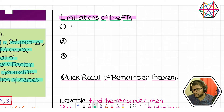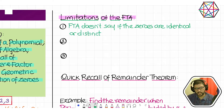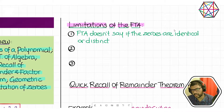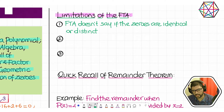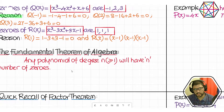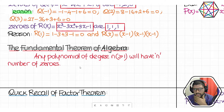FTA does not say whether the zeros are distinct or repeating. FTA does not say anything about if the zeros are identical or distinct. All that it states — the fundamental theorem of algebra — is that if the degree is n, there are n number of zeros. But it does not say anything about whether those zeros are distinct or identical.